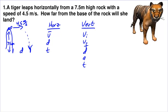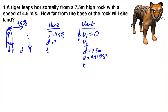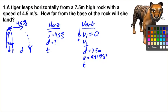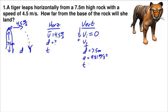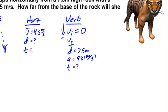What do we know from the problem? Horizontally, the tiger's speed is 4.5 meters per second. We want to know D, but we don't know time yet. So let's go to our vertical table. Vertically, the tiger's initial speed is 0 — even though the tiger's moving horizontally, vertically there's no speed at the initial part of the leap. The displacement, calling down the positive direction, is 7.5 meters, and acceleration due to gravity is 9.81 meters per second squared. We know three things, so we can solve for the other two. We want T so we can use it in our horizontal table.